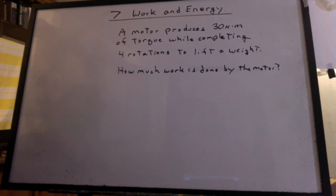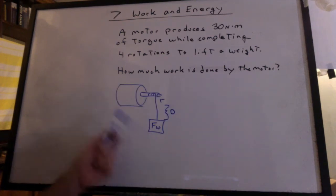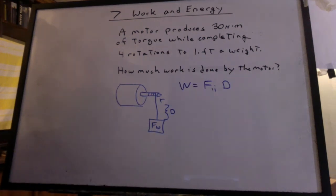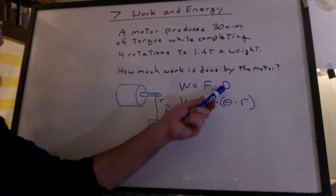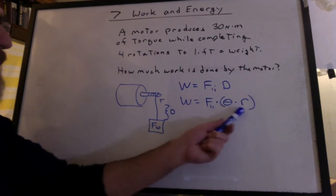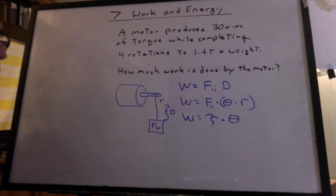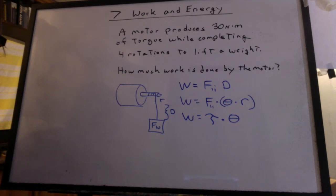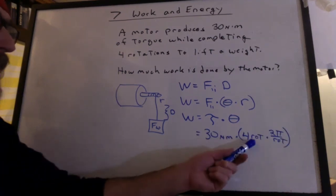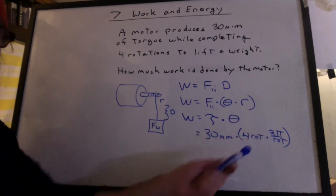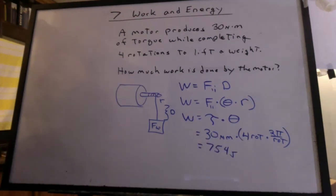A motor produces 30 newton meters of torque while completing four rotations to lift the weight. How much work is done by the motor? If that's a motor and there's a shaft with a rope, then that's going to be a weight that we're going to lift through a distance. I don't know any of these values. I don't know the radius, the distance, or the weight. How do we do it? We're going to have to convert this to rotational terms. Consider that the distance traveled is going to be theta times R. If I bring the R over to the F, I get work equals torque times theta. I use the 30 newton meters of torque times four rotations, but it has to be converted to radians. And we get 754 joules.